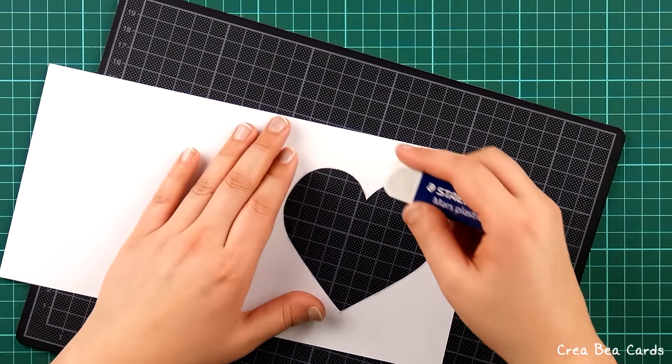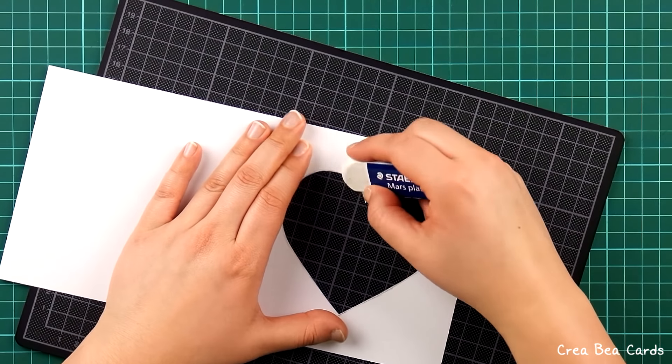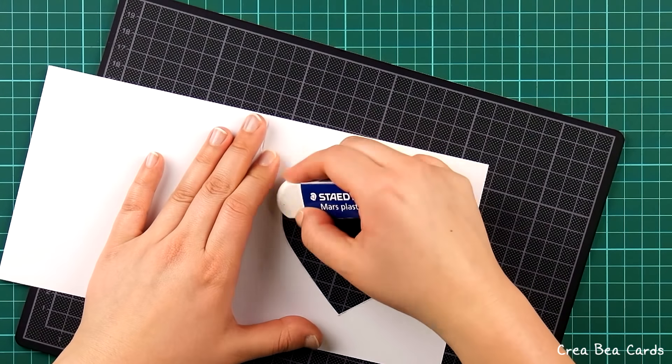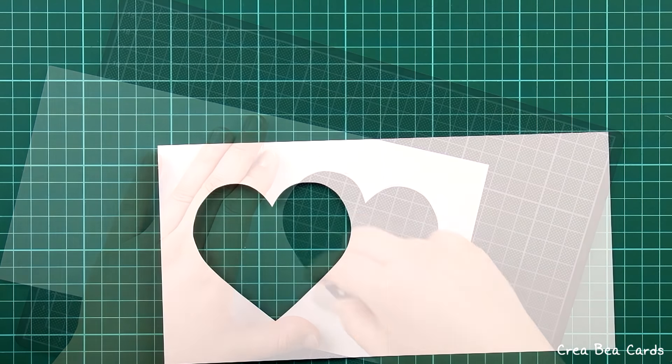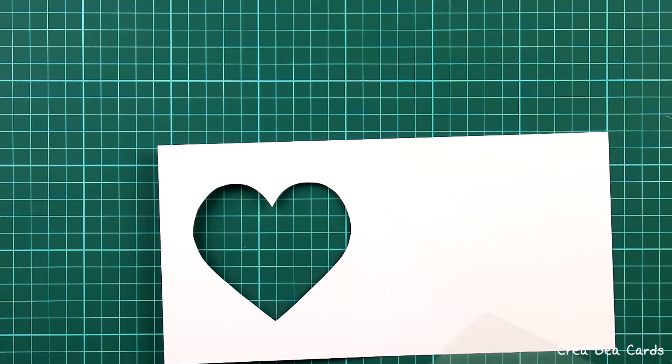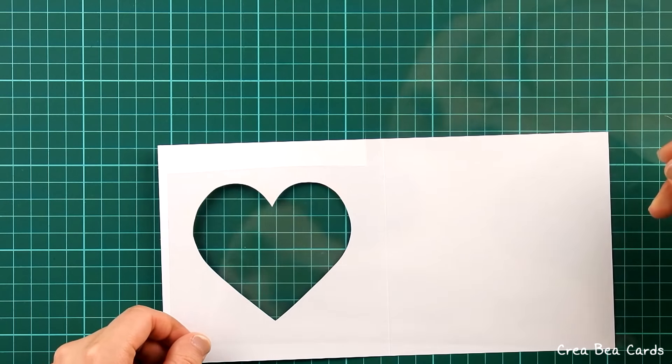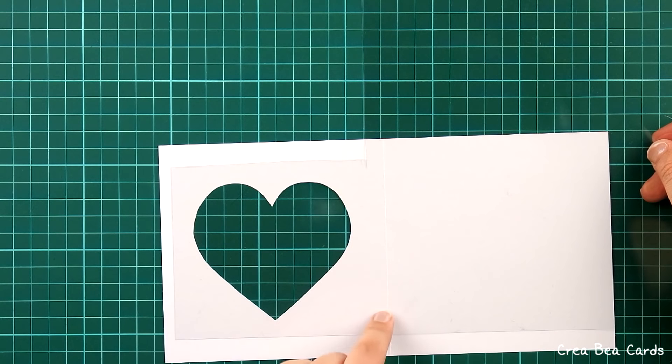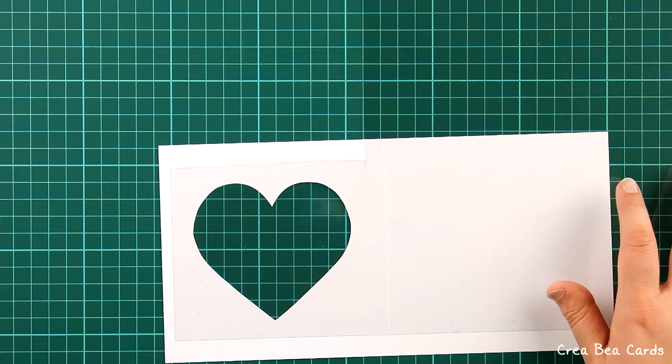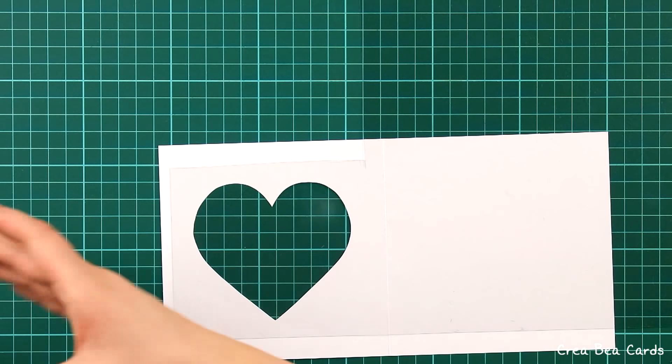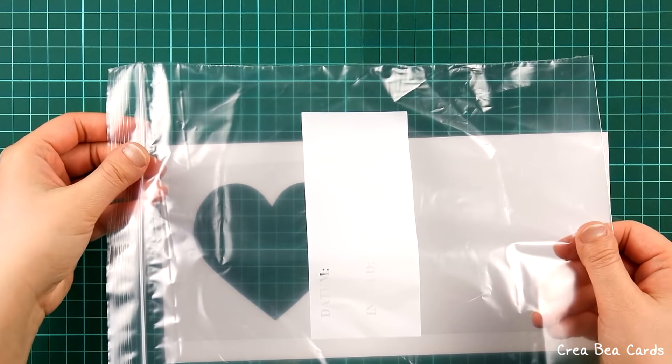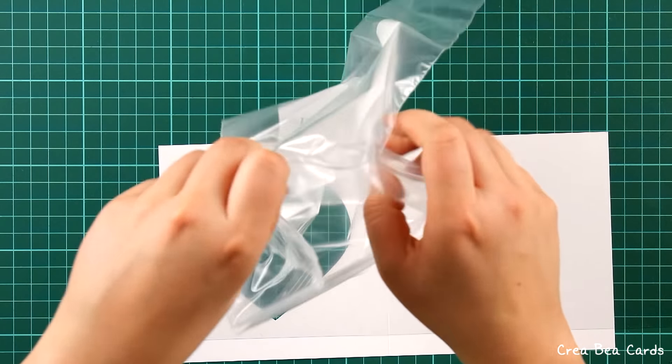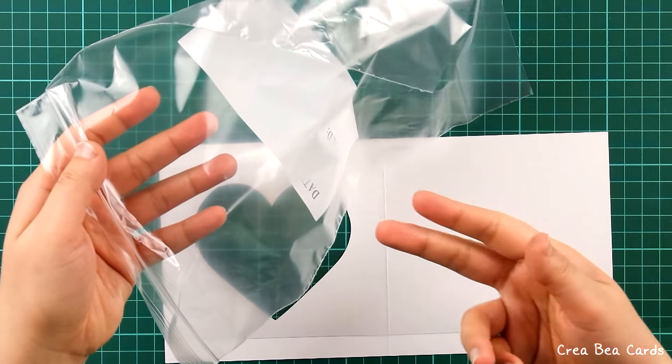Remove pencil traces with an eraser. Take a sheet of plastic and cut out a square that is slightly larger than the heart shape itself. If you don't have a sheet of plastic at home, you could use a part of a zipper bag or a plastic pocket instead.